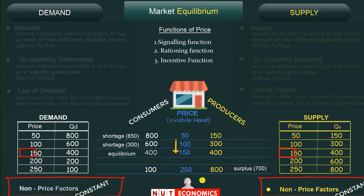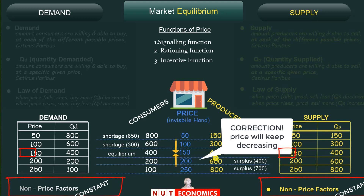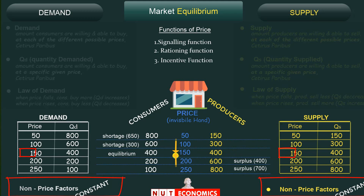With a surplus of 700 units, ice cream shops find it difficult to sell their stock. Producers will start offering discounts and sales, so the price falls. The falling price attracts consumers — quantity demanded increases to 200 — and rations out excess producers, so quantity supplied falls. The surplus reduces to 400 ice creams. As long as there is a surplus, price keeps falling towards 150, automatically reaching equilibrium.